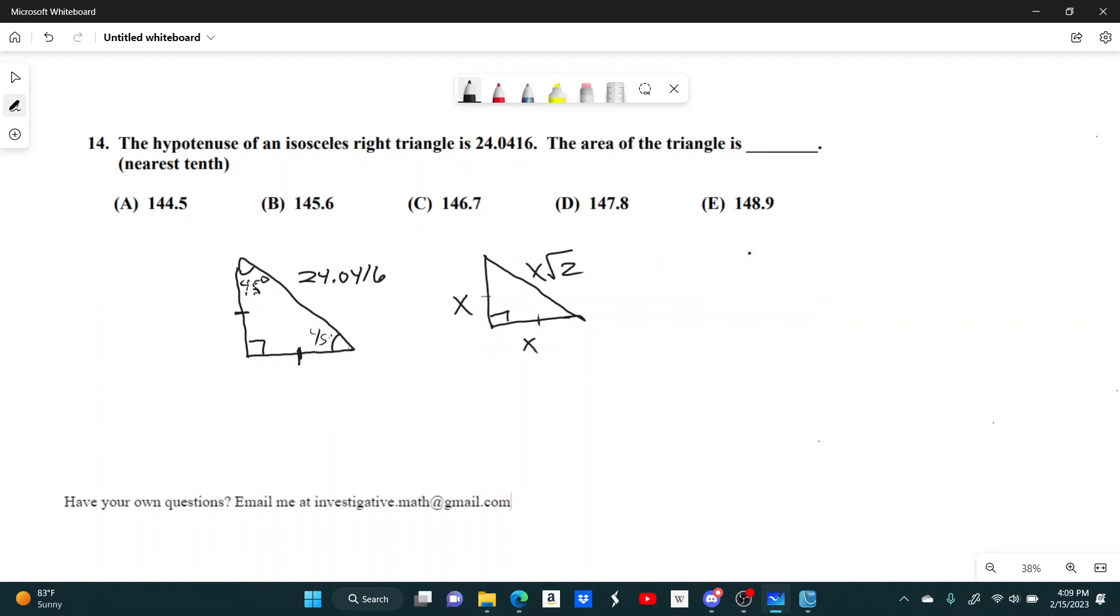This just comes from the Pythagorean Theorem, right? If I was looking for the hypotenuse, I would say x squared plus x squared equals the hypotenuse squared. So 2x squared equals c squared. So c would be the square root of 2x squared, which is just x times the square root of 2.